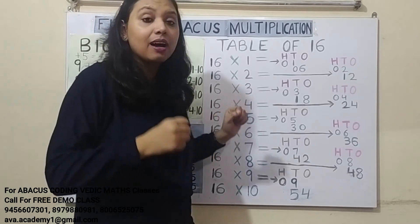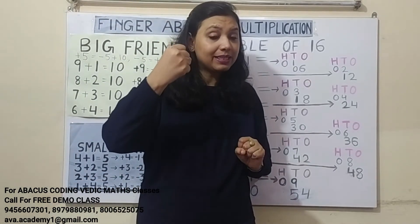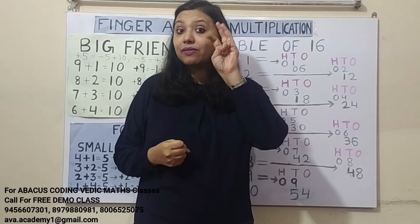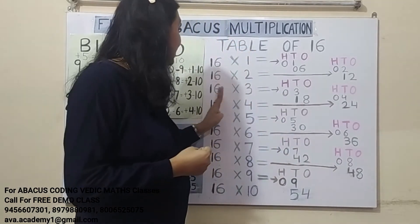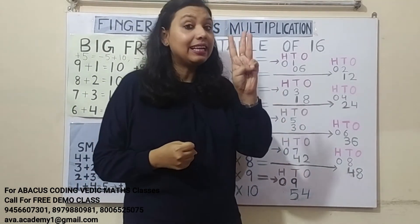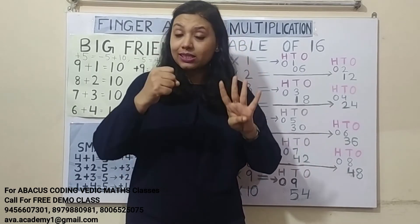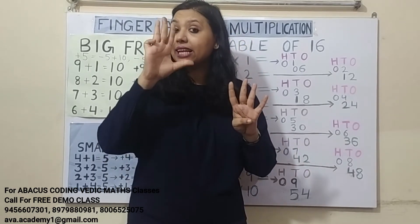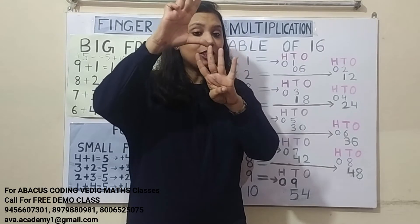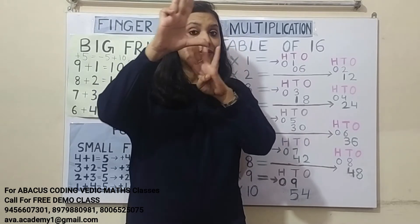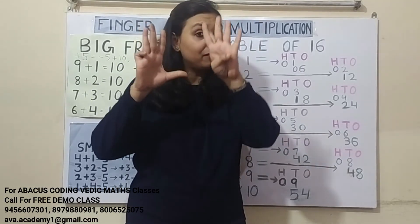16 threes are: 1 threes are 3 — in 100's we represent 0, and in 10's we represent 3. 6 threes are 18 — in 10's we represent 1, and in 1's we represent 8. The answer is 48.